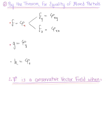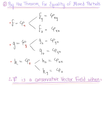Moving to our second case, G equals the partial derivative of phi with respect to y. Differentiating with respect to the other two variables x and z: the partial derivative of G with respect to x equals phi_yx, and the partial derivative of G with respect to z equals phi_yz. Last, H equals phi_z, so the partial derivative of H with respect to x equals phi_zx, and the partial derivative of H with respect to y equals phi_zy.